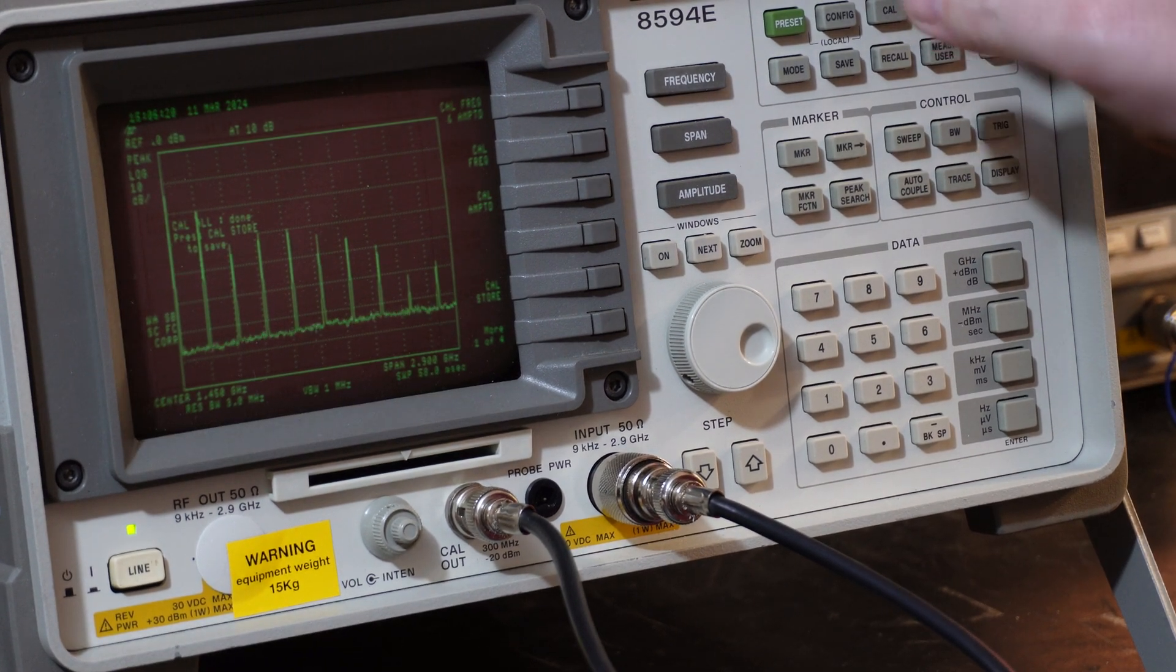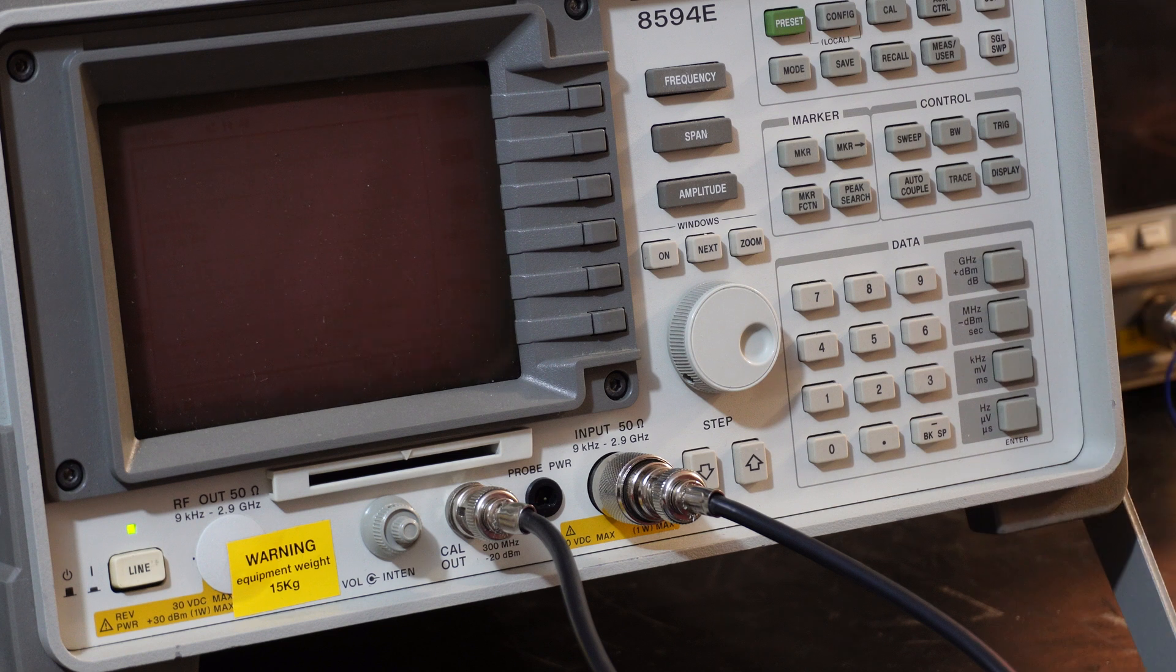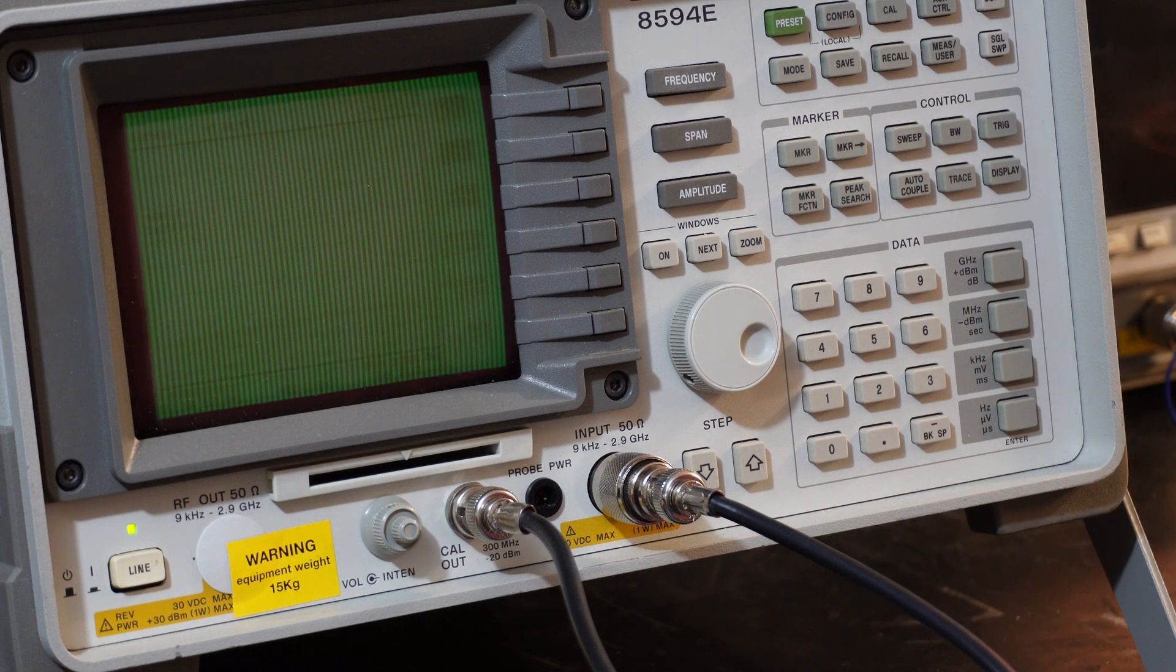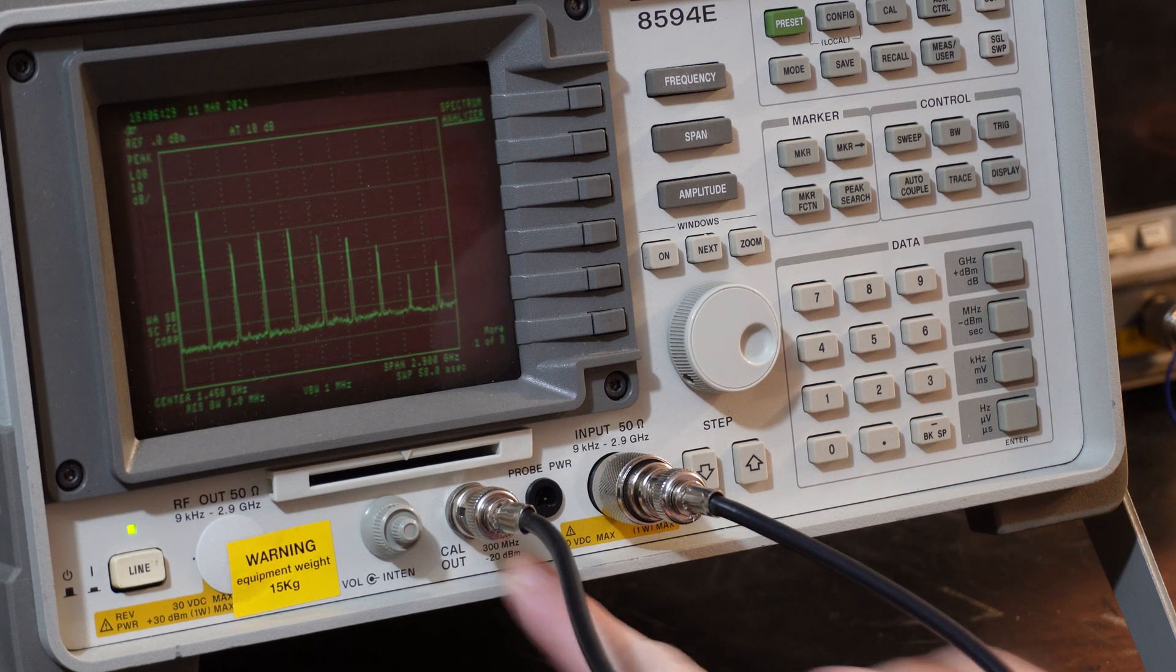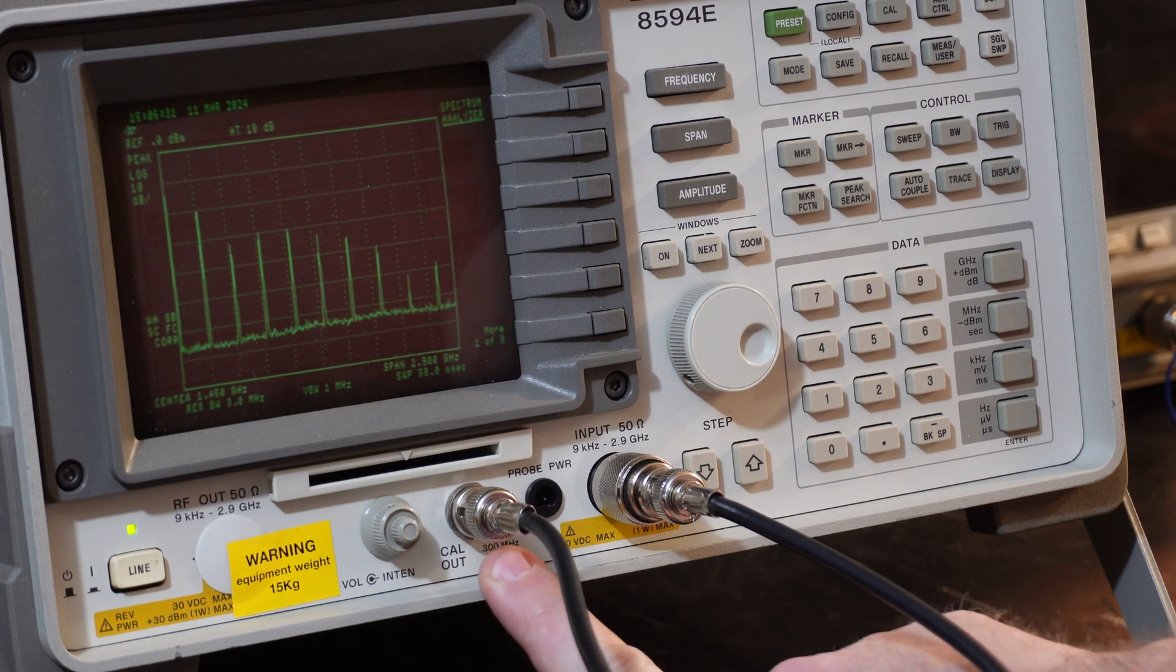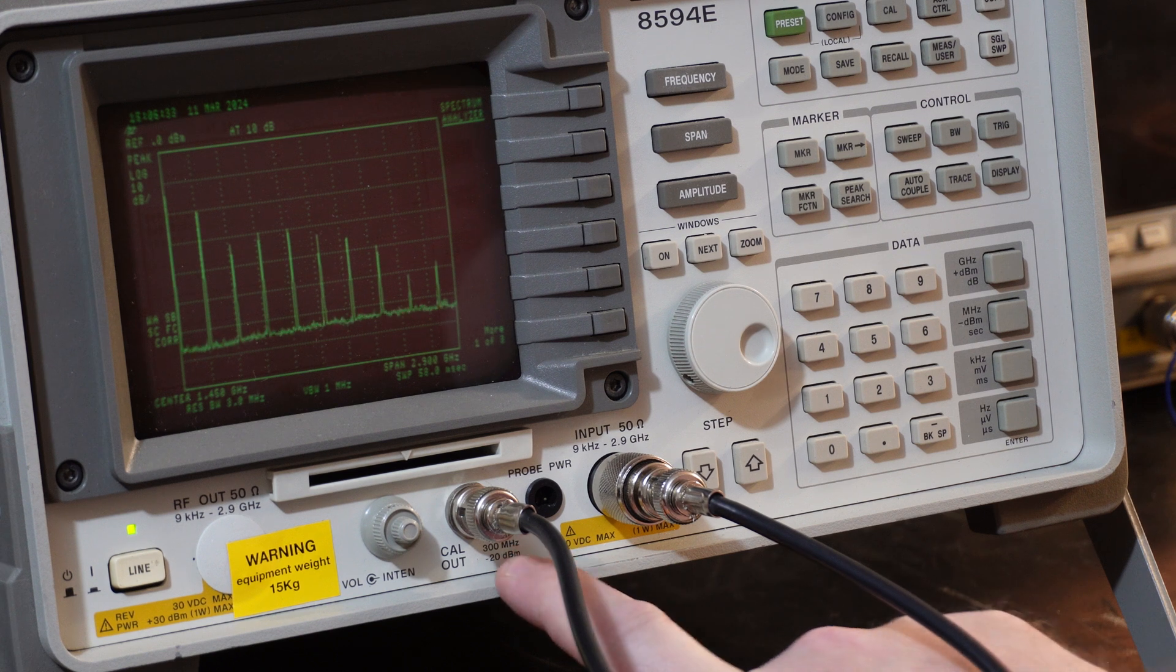Okay, so we've got her calibrated. Just hit preset to bring her back to the start. What I want to do first is measure the calibration signal. We have a 300 megahertz signal at minus 20 dBm.